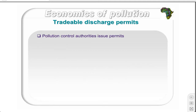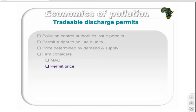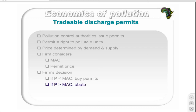A market for tradable discharge permits is created by pollution control authorities issuing a number of permits. Each permit allows a firm the right to pollute a certain quantity of emissions, while the price of the permit is determined by supply and demand in the market. A firm will compare the cost to reduce pollution (its MAC) versus the cost of buying a permit (the permit price). If the permit price is less than MAC, the firm will buy more permits. If the permit price is greater than MAC, it will reduce its pollution. If a firm holds permits but can reduce pollution at a lower cost than the permit price, it will reduce pollution and sell the permits on the market.